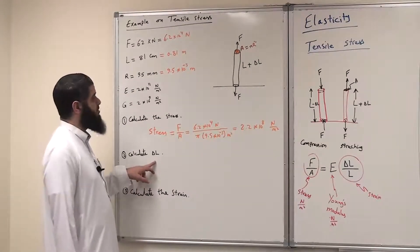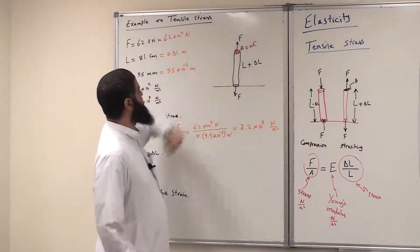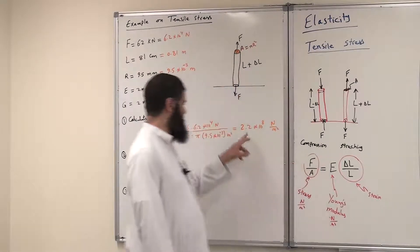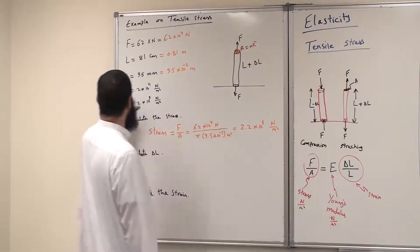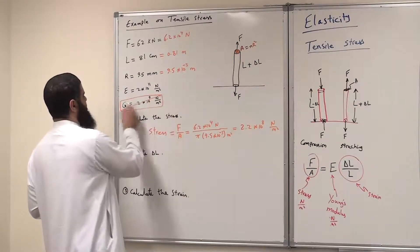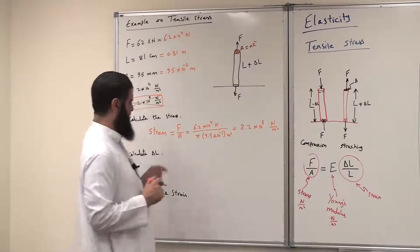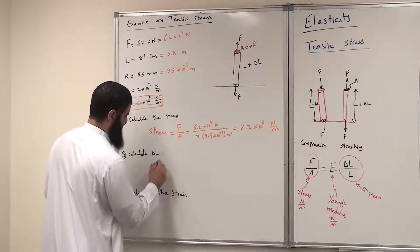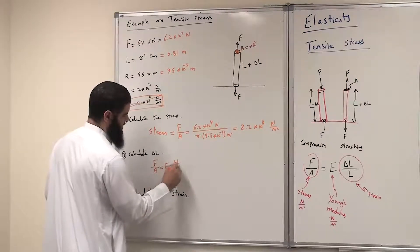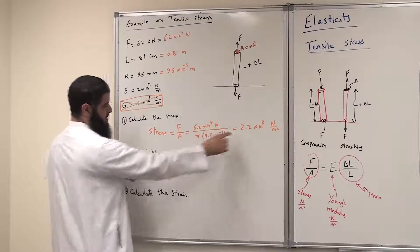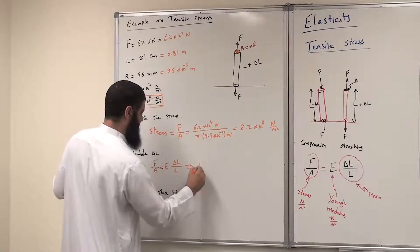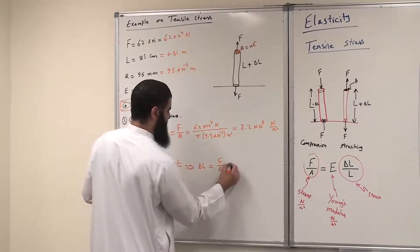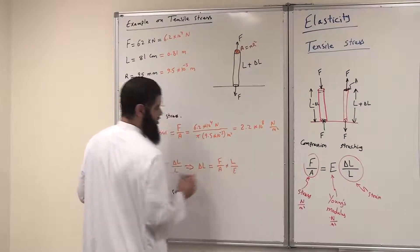Next, calculate ΔL — the increase in length due to the tensile force. We apply the formula: F/A = E × (ΔL/L). We use Young's modulus E, not the shear modulus G, because we don't have a twisting or shearing force. Rearranging, ΔL equals the stress (force over area) multiplied by the original length, divided by E, the Young's modulus.